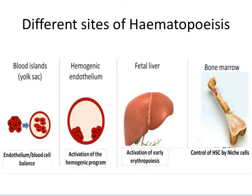The organs that provide microenvironments supporting the differentiation of hematopoietic stem cells change over the course of embryonic development. However, by mid-to-late gestation, hematopoietic stem cells take up residence in the bone marrow, which remains the primary site of hematopoiesis throughout adult life. The bone marrow supports the maturation of all erythroid and myeloid cells, and in humans and mice, the maturation of B lymphocytes.